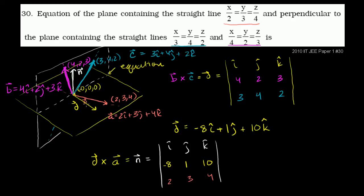Vector d will sit in this yellow plane — you can always position a vector anywhere you want, but if you start it at 0, it will clearly sit in that plane. So it will sit in this yellow plane that we need to find the equation for. We know vector d sits in it, and we already know that vector a sits in it, from the first video on this problem.